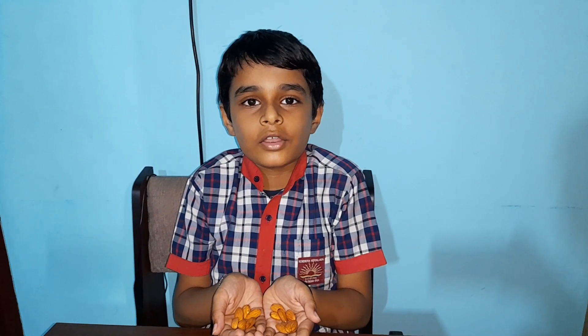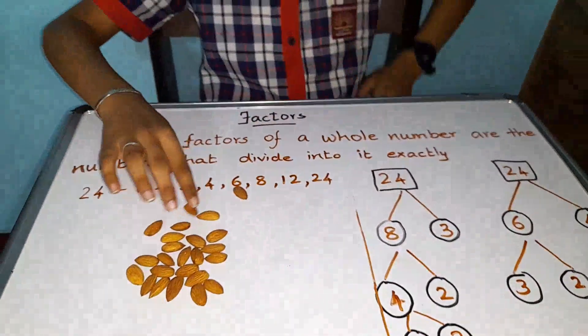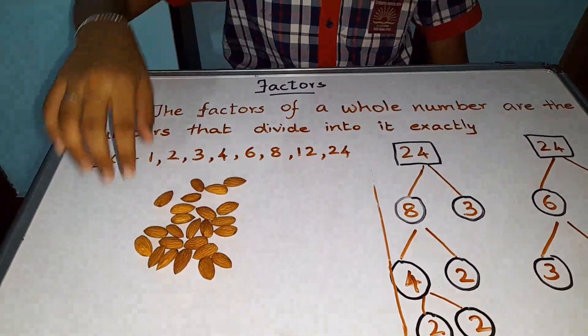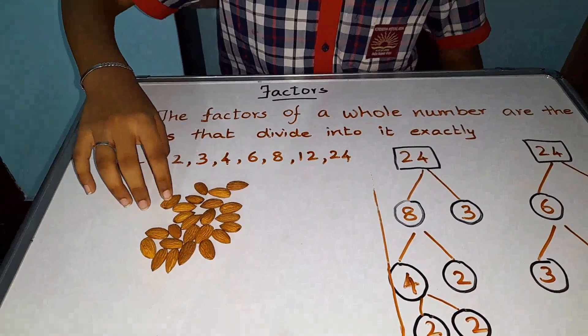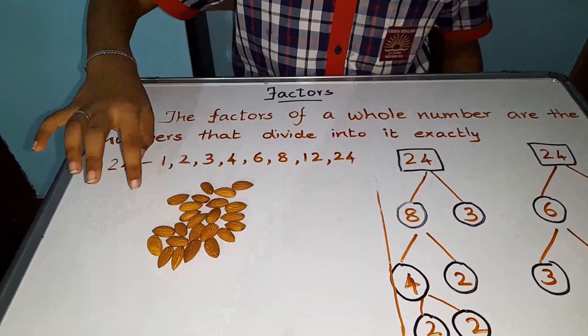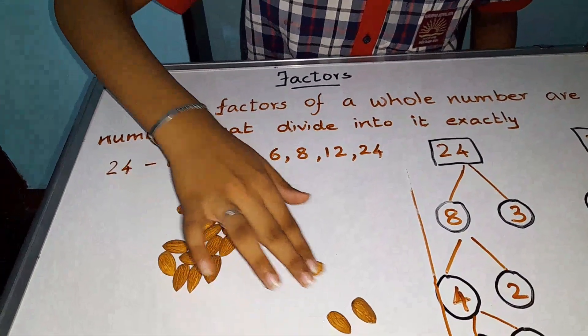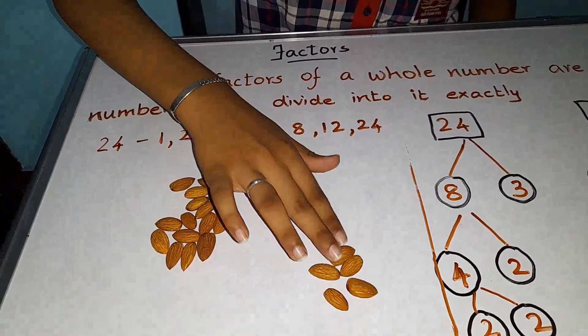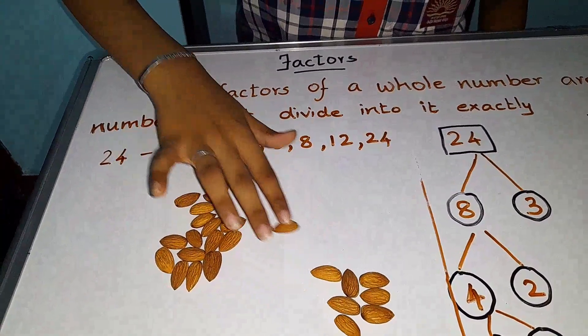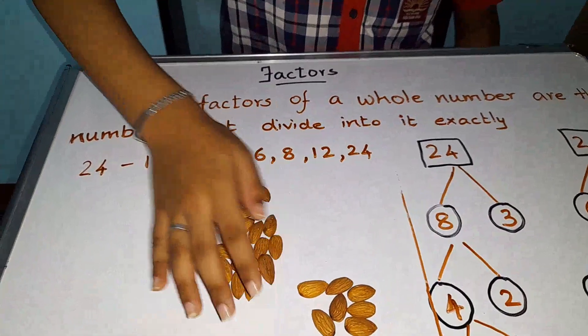Almonds are my favorite nuts. Now I am going to explain factors using them. I have taken 24 almonds. First we are going to divide these 24 almonds into 3 groups. 24 divided by 3 is equal to 8, so we have to put 8 almonds in each group. 1, 2, 3, 4, 5, 6, 7, 8 — the first group is done.